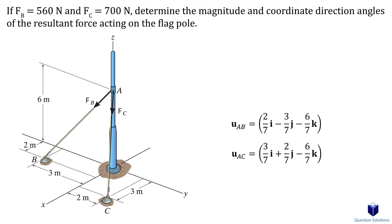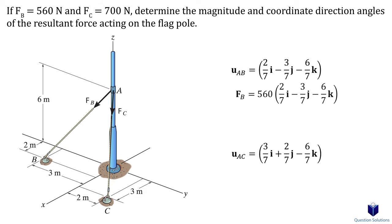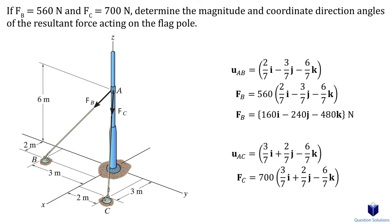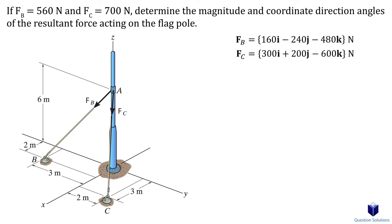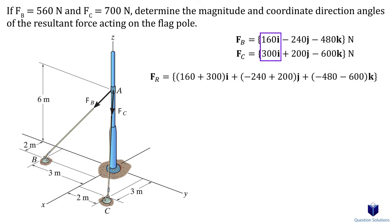The last step in expressing our force in Cartesian form is to multiply it by the unit vector. For force FB, we multiply each term in the unit vector by 560 newtons. Next, we have force FC — all we do is multiply the magnitude of the force by the unit vector. Now that we have our forces expressed in Cartesian form, we can add them together to get the resultant force. We just add i components to i components, j components to j components, and k components to k components.